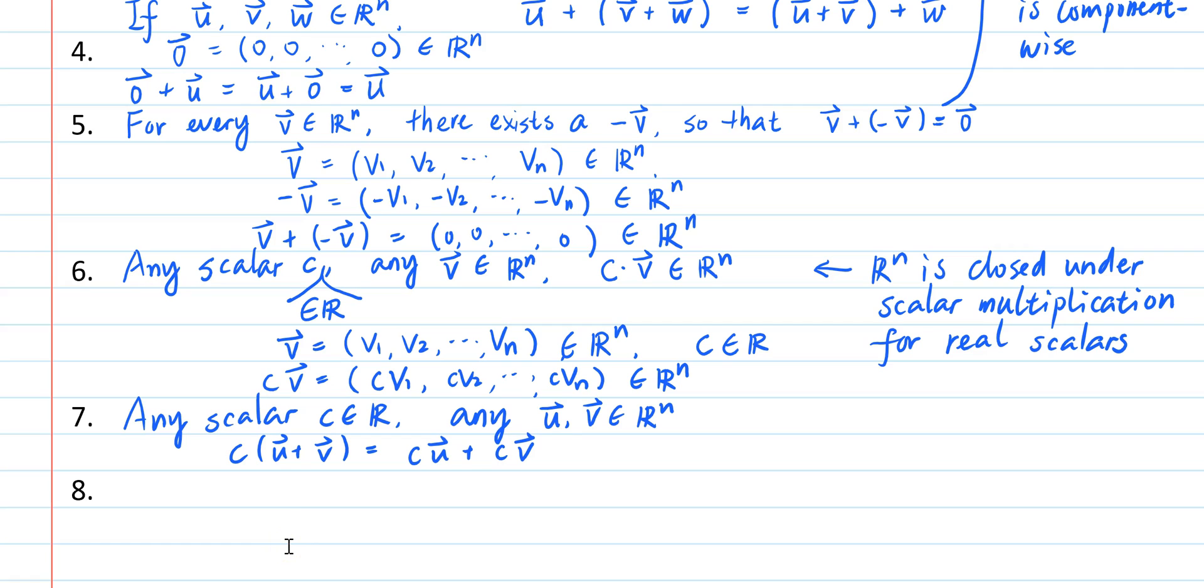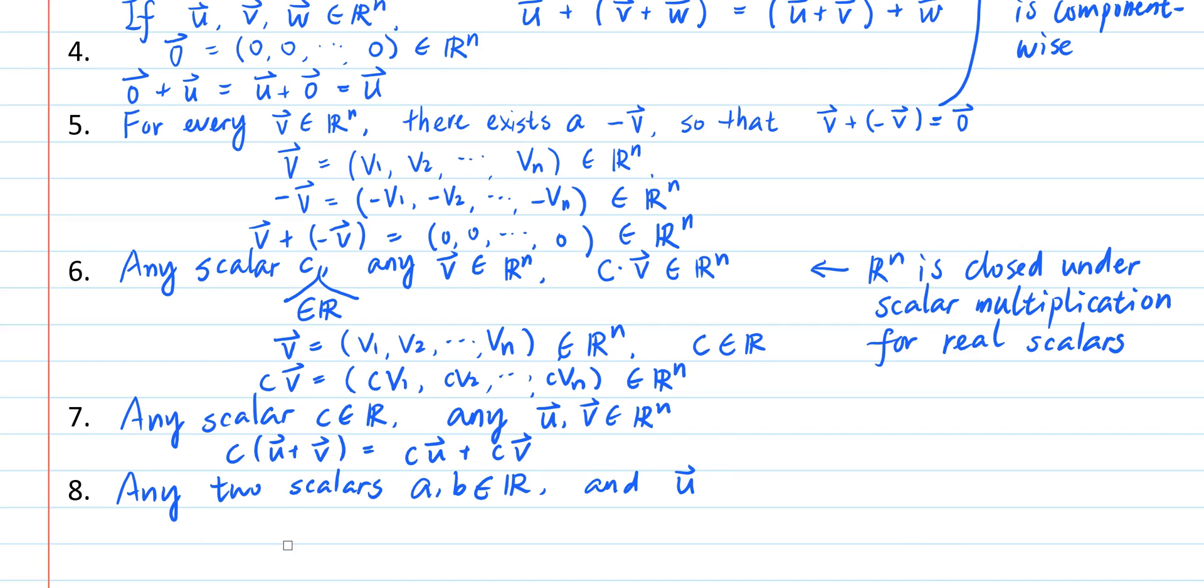The eighth property is also about the distributive law of scalar multiplication, but in a different way. So if you have any two scalars and an element u of R^n, then the scalar multiple of a plus b and u is equal to the sum of au and bu.